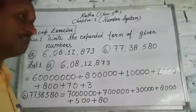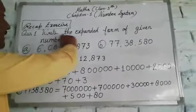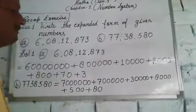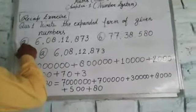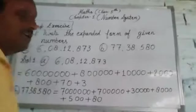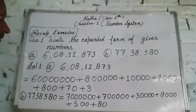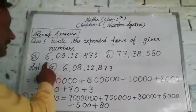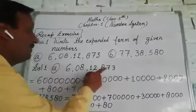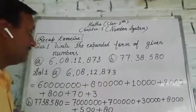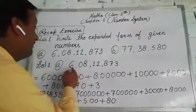The first question is write the expanded form of given numbers. Here you can see this is the first number and this is the second number. So, this expanded form is written in the previous class. Here you can see the first number.